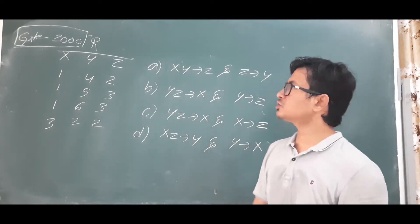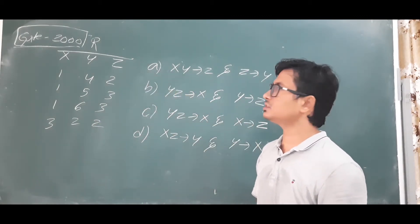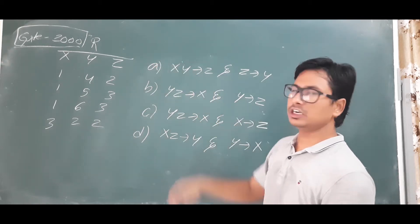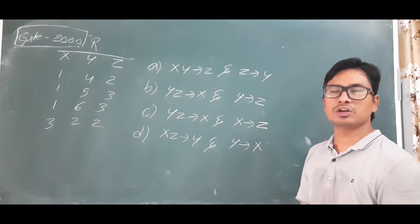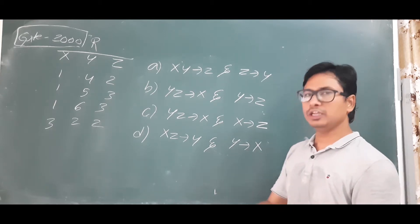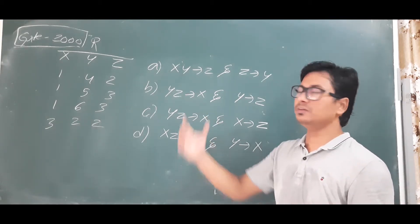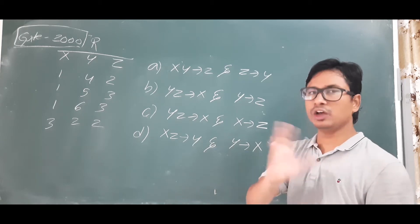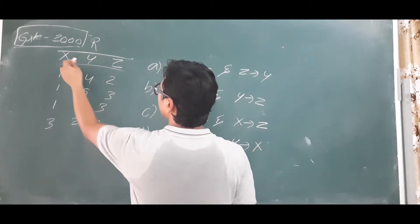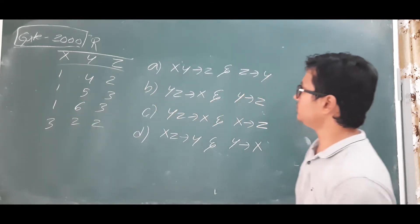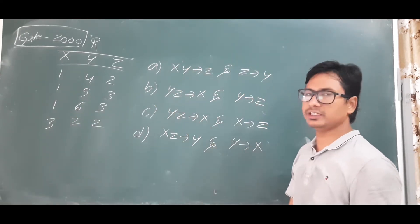Good morning students. We'll solve one GATE question from GATE 2000 on functional dependencies, so that you can understand the functional dependency concept in a better way. You will also come to know what kind of questions they ask on the definition part. Suppose they have given one relation and four options A, B, C, D, asking which one is valid.